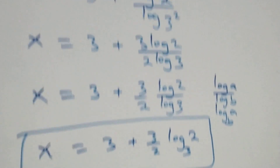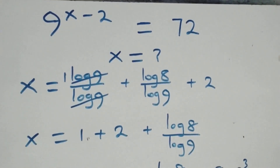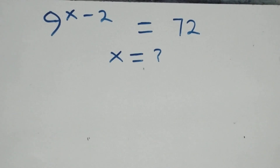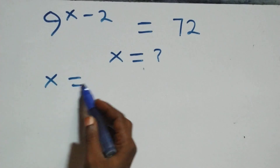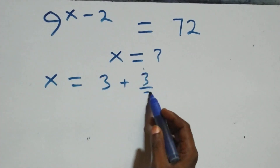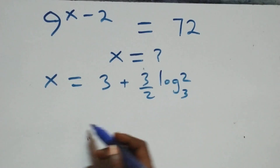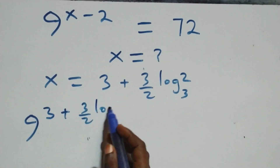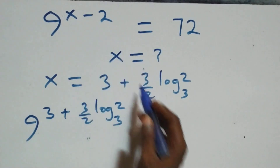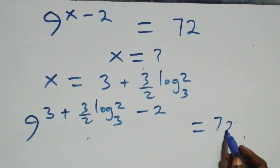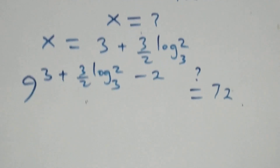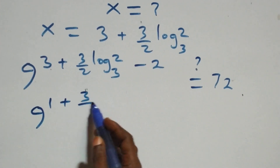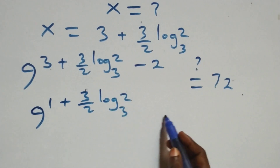Now let's check whether this satisfies the original problem. Substituting x equals three plus three over two log two base three, we have nine raised to power three plus three over two log two base three, minus two. Is this equal to 72? Bringing three minus two together gives one, so nine raised to power one plus three over two log two base three — is it equal to 72?